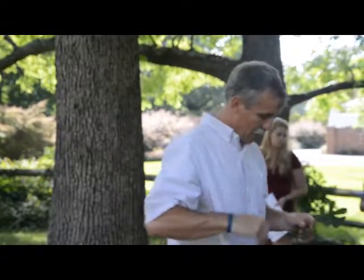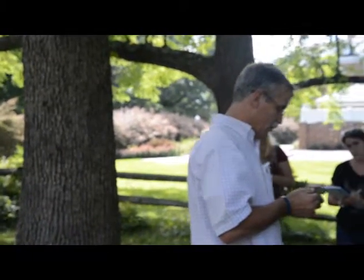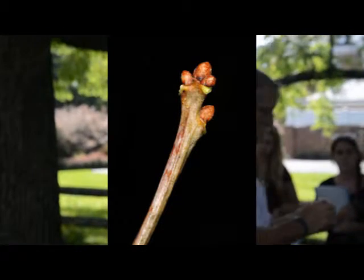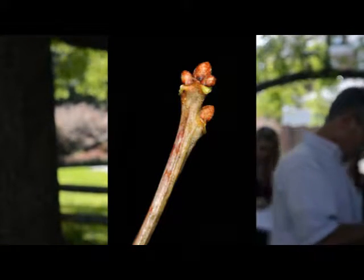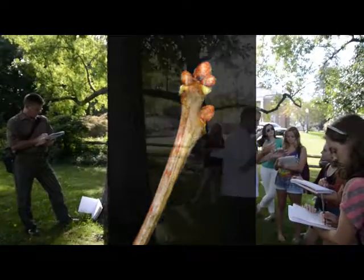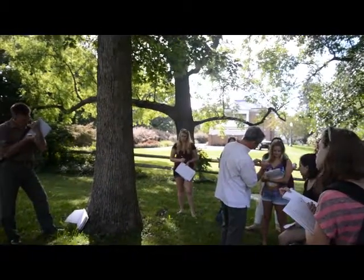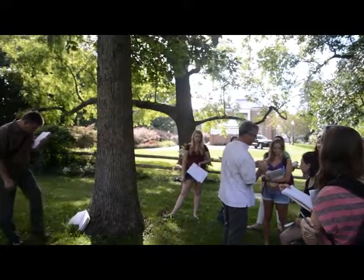All the oaks are alternate, but the leaves at the end of the twigs pile up like cars at a stoplight, which means the buds pile up too. We say oaks have clustered buds. Is that a different category from alternate? No, it's still alternate — but there might be five buds on the end of an oak twig. So remember: oaks have alternate leaves with clustered buds.